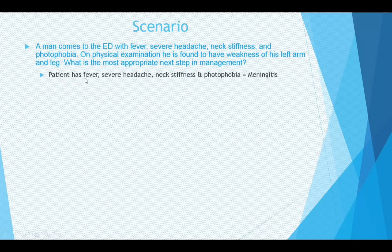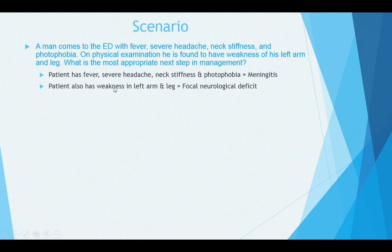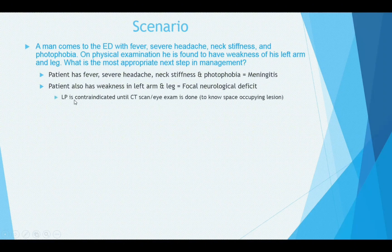This patient is having fever, severe headache, neck stiffness, and photophobia, so most likely he is suffering from bacterial meningitis. The patient also has weakness in his left arm and leg, so he is having a focal neurological deficit. In focal neurological deficit, lumbar puncture is contraindicated.